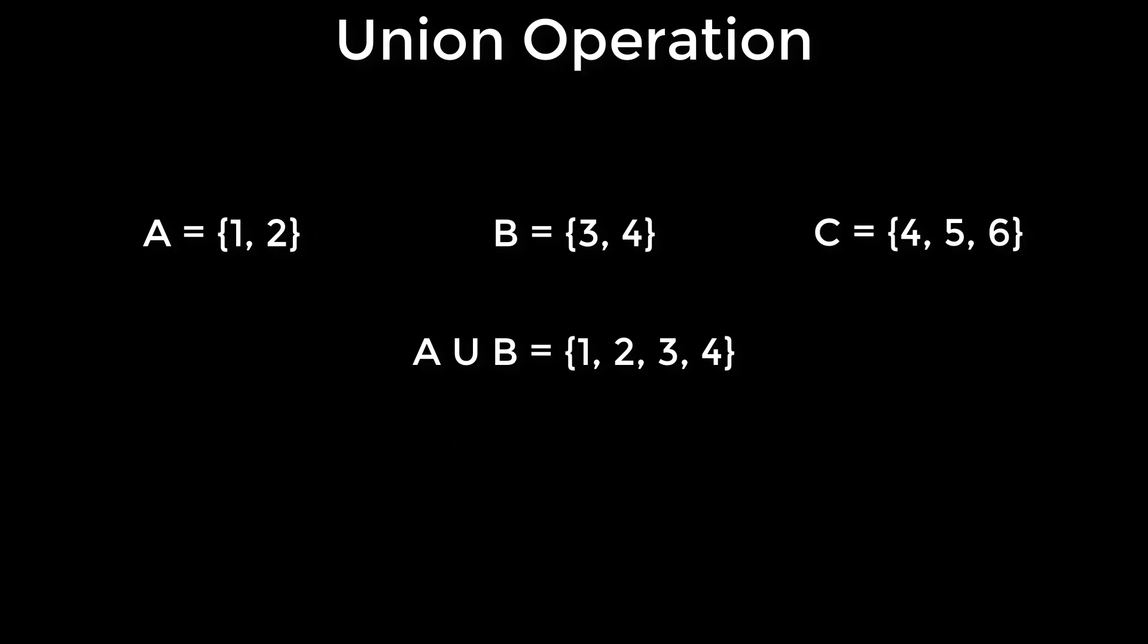So we have another set C. And the elements are 4, 5, 6. Then, A union B union C is a set of 1, 2, 3, 4, 5, 6.